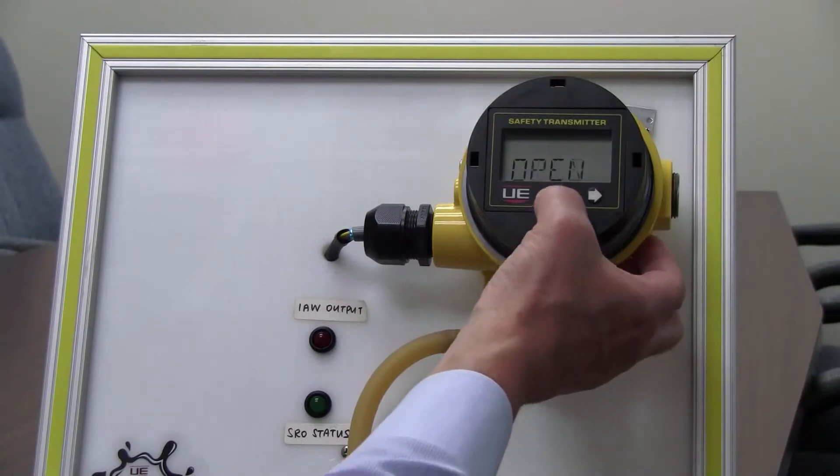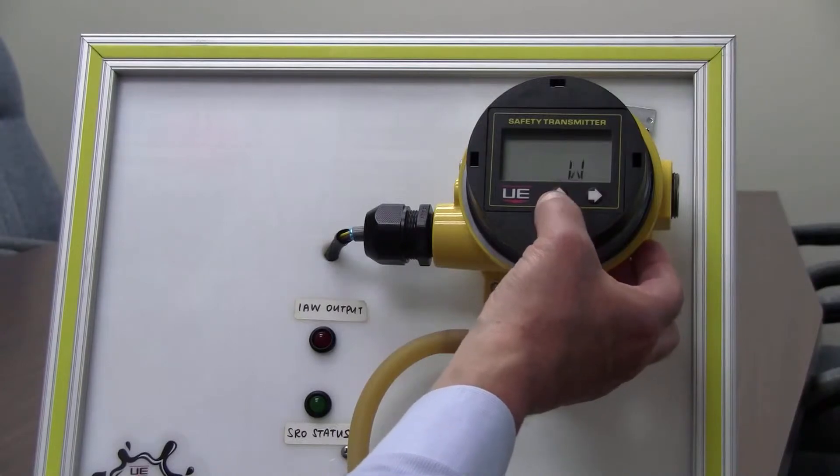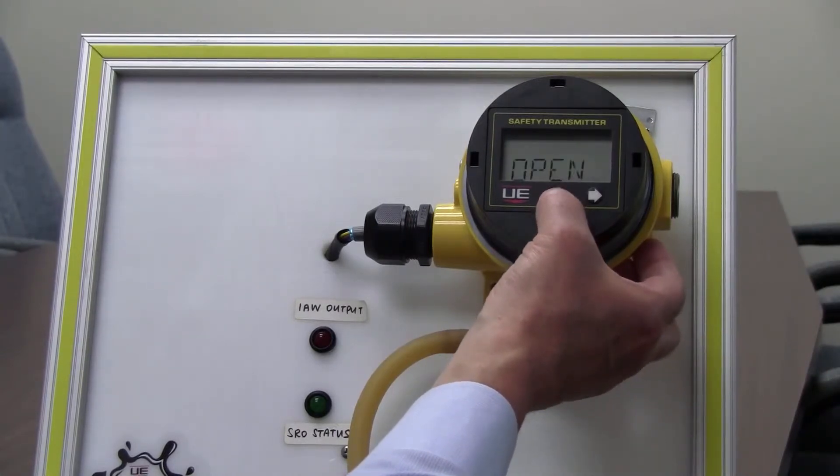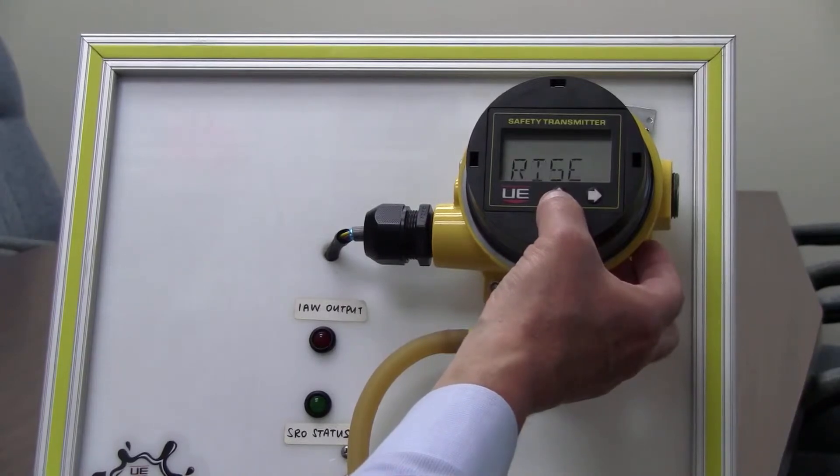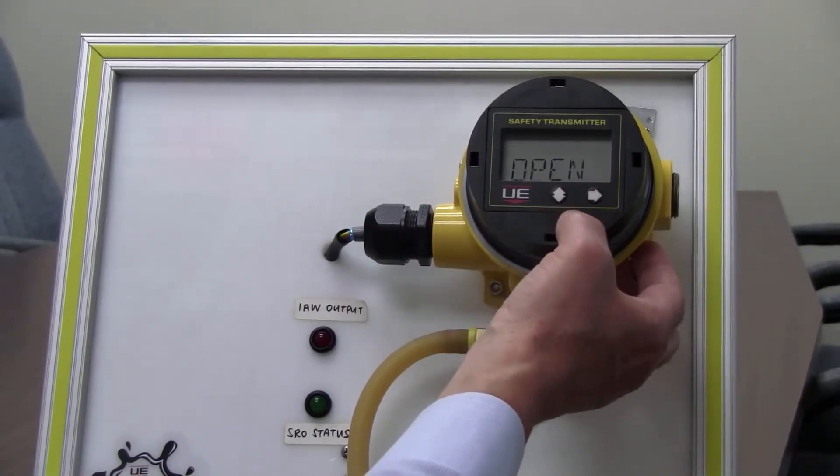By hitting the right hand arrow which is currently set to open on rise and let me show you how to change that. If I hit the up down arrow it's now open on fall, hit it one more time, it's in the window mode and hit it again and it loops around back to the original open on rise setting. We'll leave it there for this demonstration.